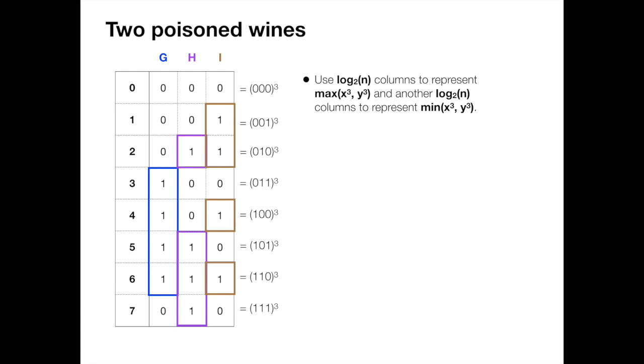In the Galois field, the multiplication is somehow strange, but let's just admit that we can do the multiplication. Then we can get the representation of maximum between x cubed and y cubed. Using three more drinks, we can represent the minimum between x cubed and y cubed.